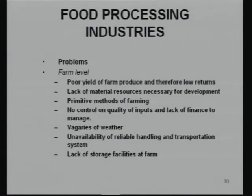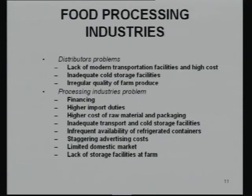Problems in food processing can exist at the farm level — such as low production yield, absence of cold storage, and dependence on monsoon. At the distribution level, storage and transport facilities are lacking. At the processing level, employer duty is high, raw material and packaging costs are high, and there are multiple laws governing the industry.